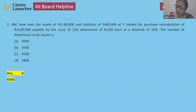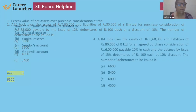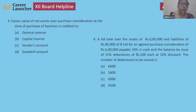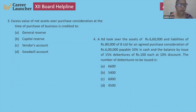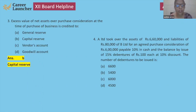Question number three: Excess value of net assets over purchase consideration at the time of purchase of business is credited to capital reserve. This question appeared even in CUET. If the balancing figure is in credit, it is treated as capital reserve. Answer: 6,500 for the previous question. The excess net asset over purchase consideration goes to capital reserve.